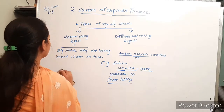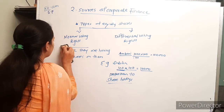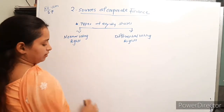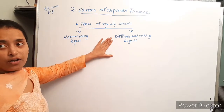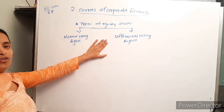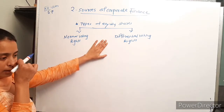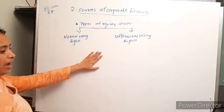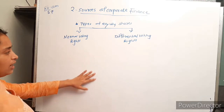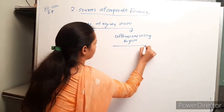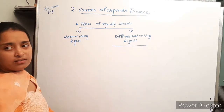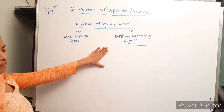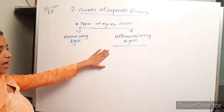Moving on to differential voting rights — such equity shareholders have varying rights regarding dividend and voting rights.